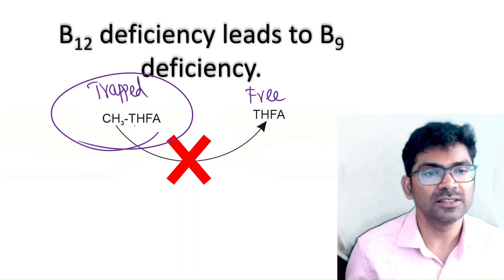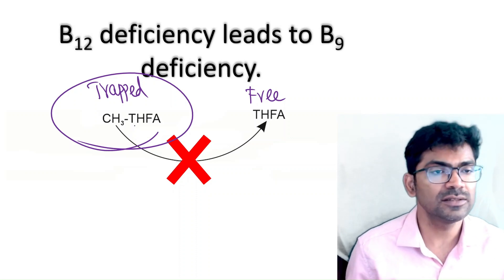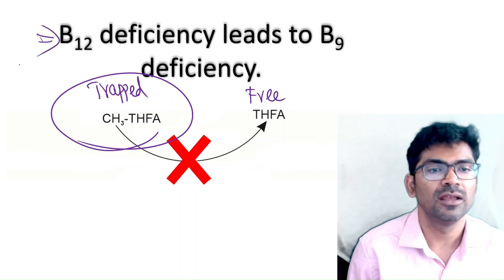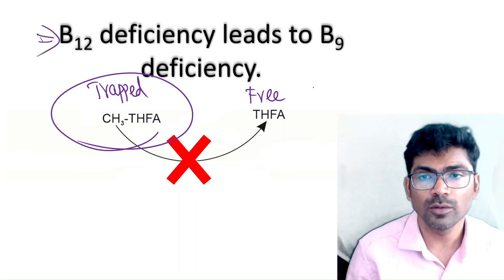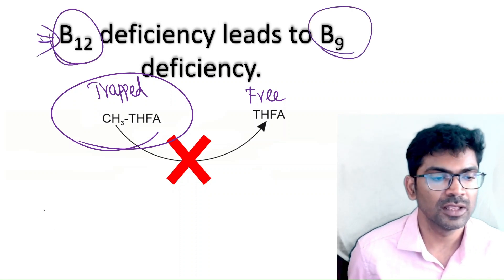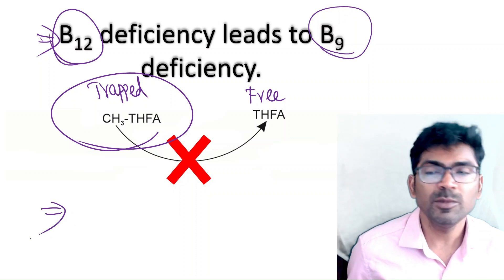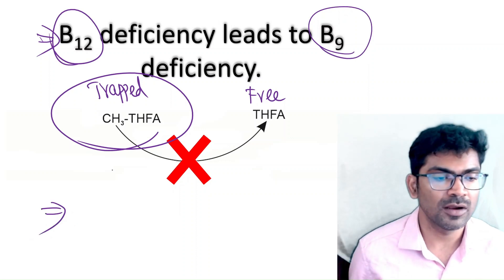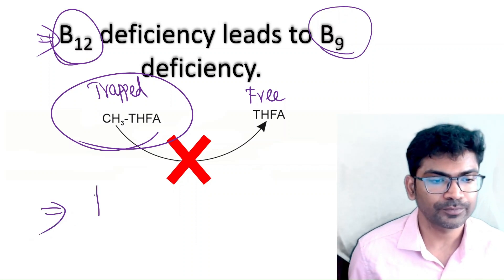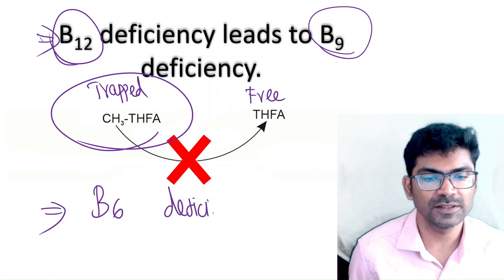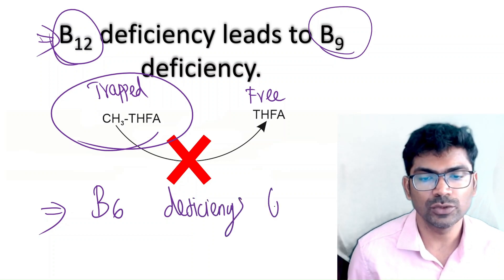The take-home message after watching this video: B12 deficiency leads to B9 deficiency. One more important concept to note: B6 deficiency also leads to a downstream effect. This will be explained in a separate video.